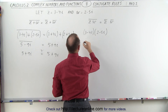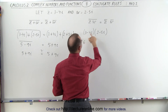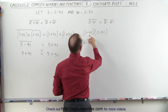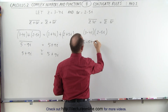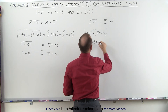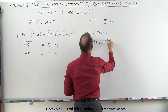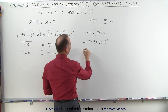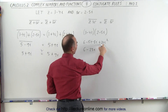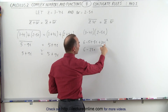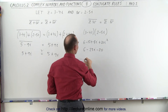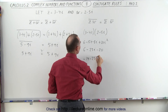We first multiply 3 times 2 which gives us 6, then 3 times minus 5i gives us minus 15i, minus 4i times 2 gives us minus 8i, and minus 4i times minus 5i gives us positive 20i squared. That simplifies to 6 minus 23i, and since i squared equals negative 1, negative 1 times positive 20 is negative 20, so this becomes minus 14 minus 23i.